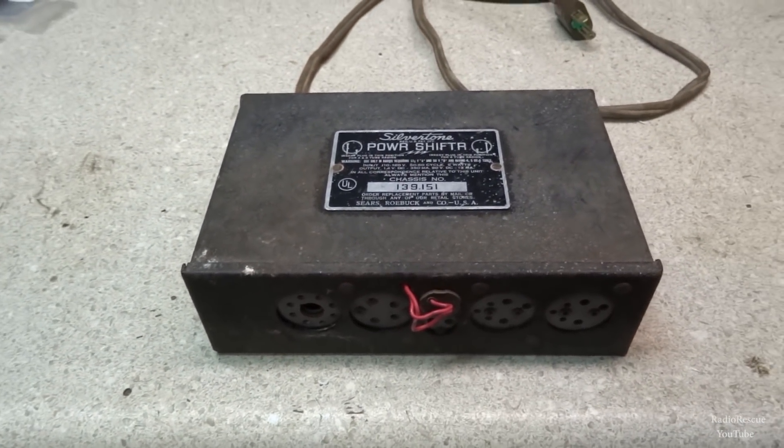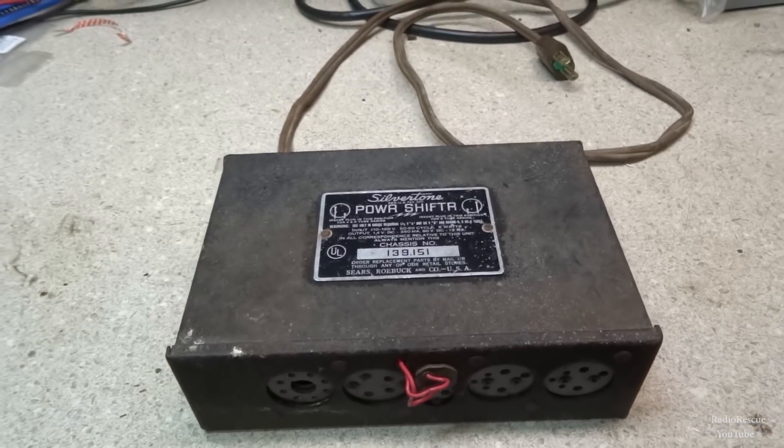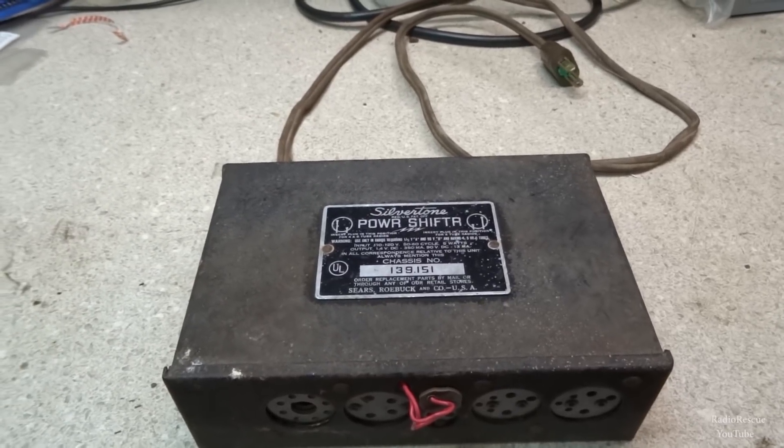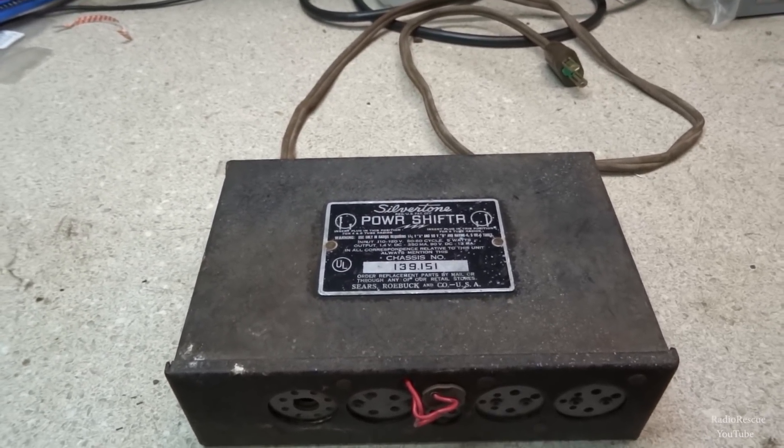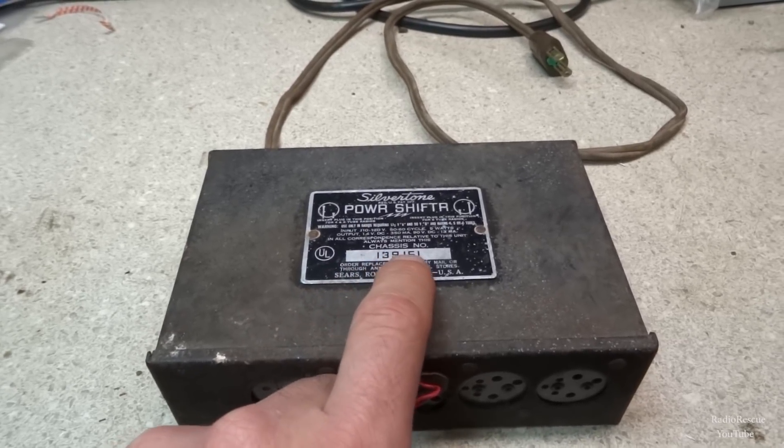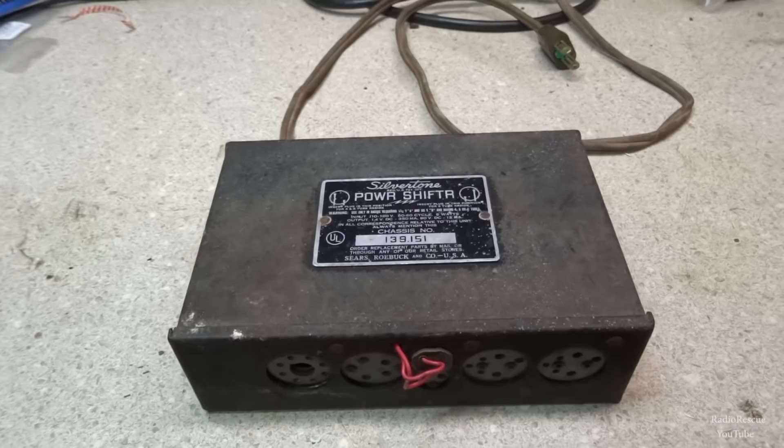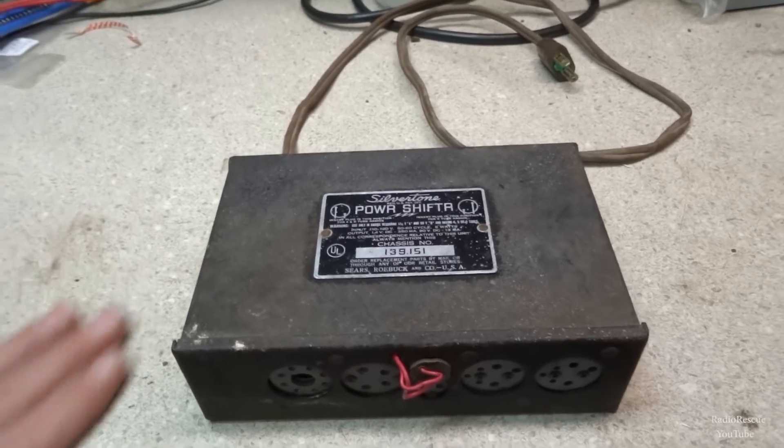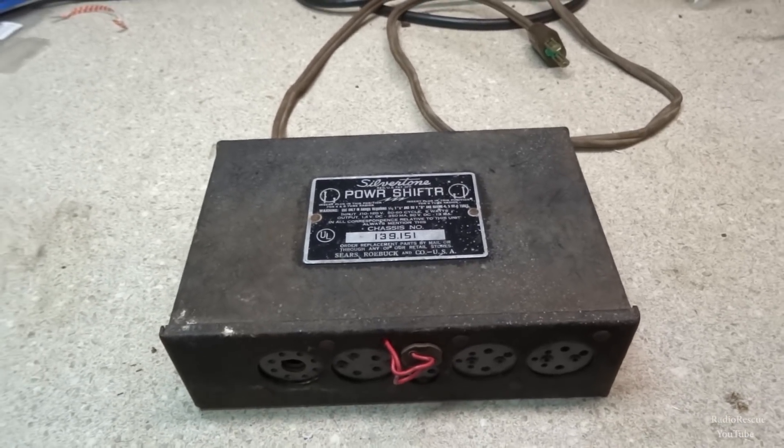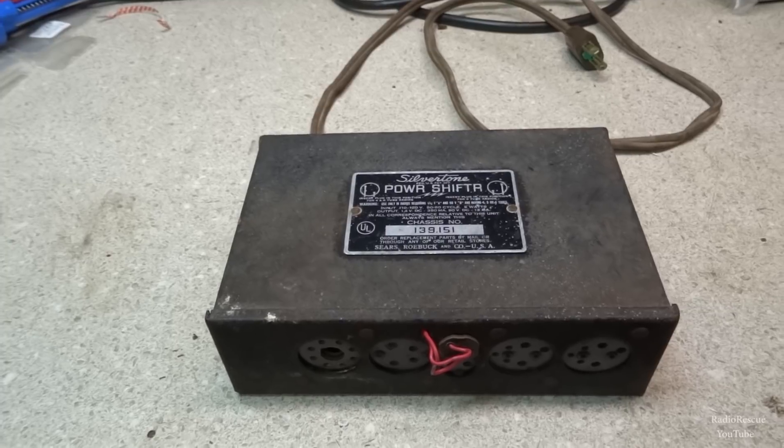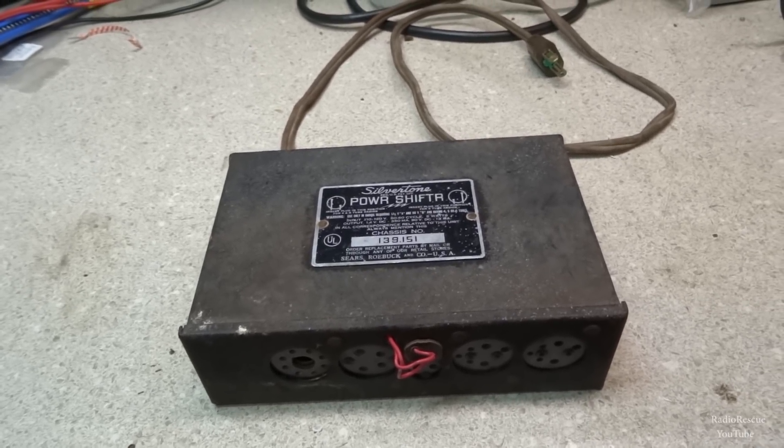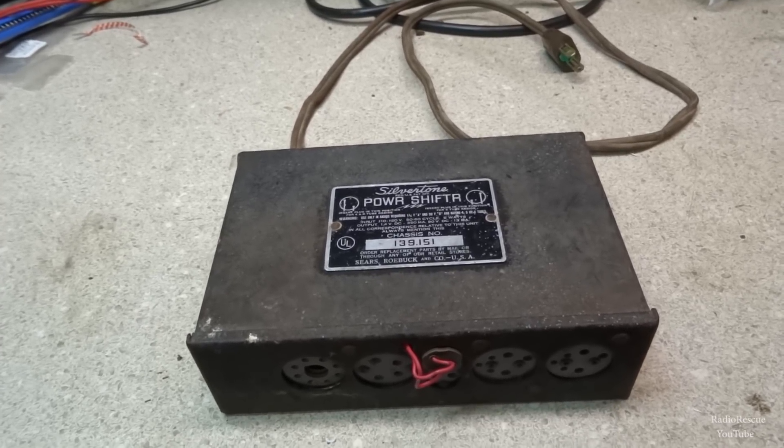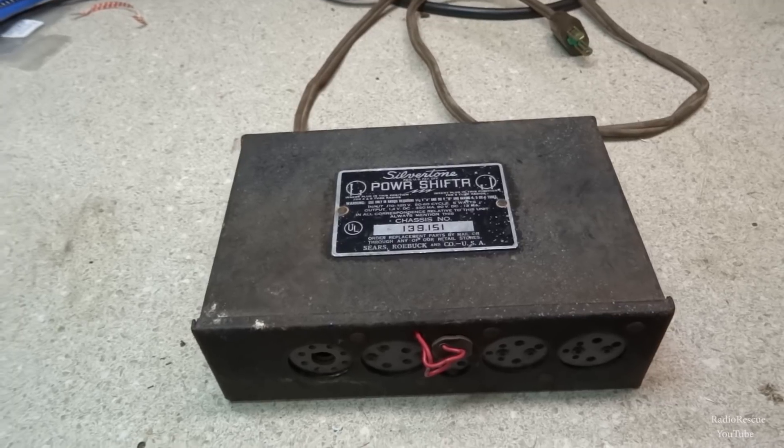Here is a sort of rusted, faded looking Sears Silver Tone Power Shifter. This is model 6686 with chassis number 139151. That's probably more likely the Sears stock number as well. This is a little power supply that allows you to run farm radios or battery operated radios off of regular 110 volt wall current AC.